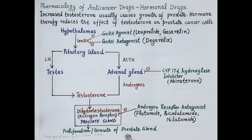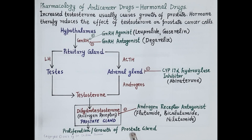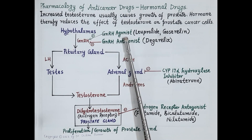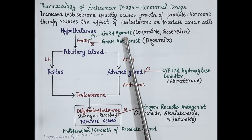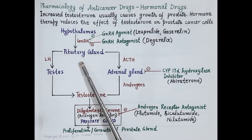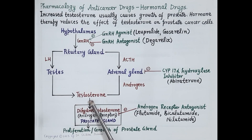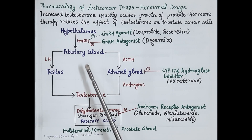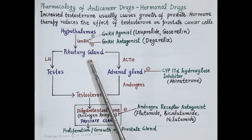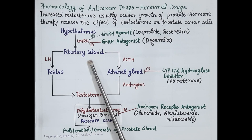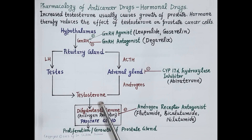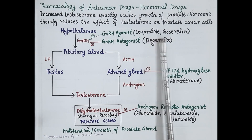Four categories of hormonal drugs are used for prostate cancer. The first are GnRH agonists, which initially stimulate GnRH receptors and increase testosterone secretion, but after one to two weeks, constant stimulation causes down-regulation and desensitization of GnRH receptors, reducing testosterone secretion. The drugs include leuprolide and goserelin.